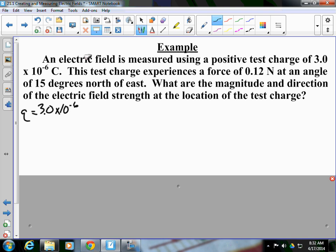Next up, this test charge experiences a force of 0.12 newtons. So our force is 0.12 newtons at an angle of 15 degrees north of east. What are the magnitude and direction of the electric field at the location of the test charge? Well, E is equal to force divided by charge. That's equal to 0.12 divided by q, and we know q is 3.0 times 10 to the negative 6.